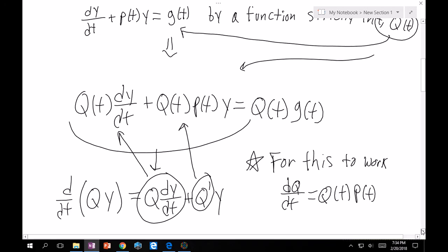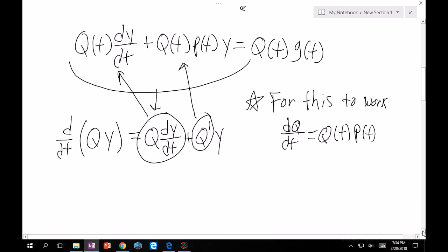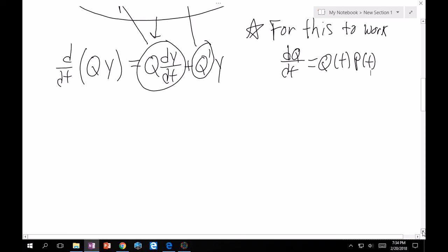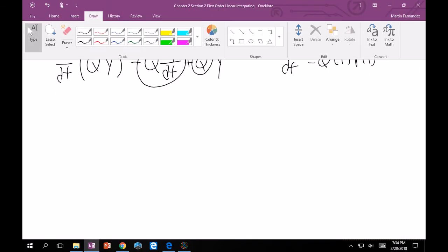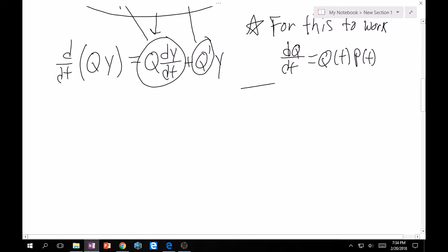And you'll notice that this is a separable equation. So keeping that in mind, we can now solve for Q here. So if I move everything, if I put my Q's with my Q's and my p(t) with my dt, I'll get dQ over Q is equal to p(t) dt.